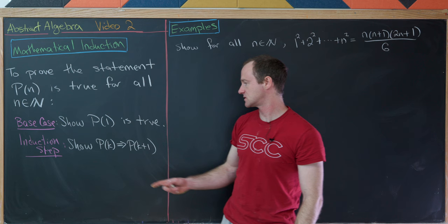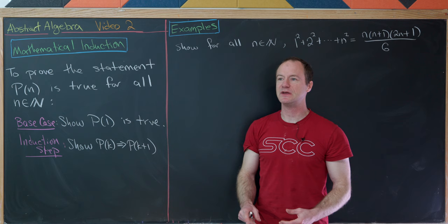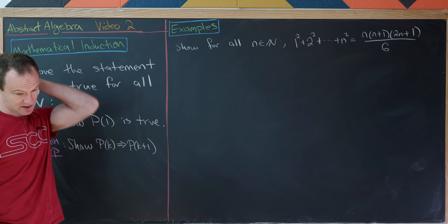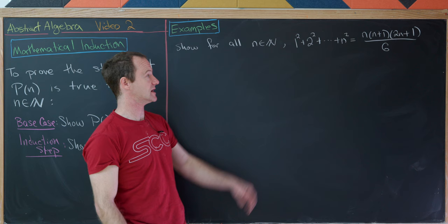This works because if we've set up the base case, the induction step takes everything else. The induction step will show that P1 implies P2, P2 implies P3, implies P4, implies P5, and so on — meaning they're all true. So let's go through a couple of examples. We'll first show that the sum of the first N squares is N(N+1)(2N+1) over 6.